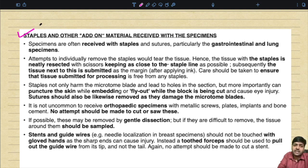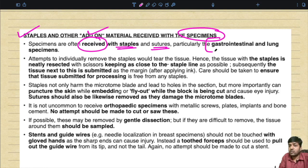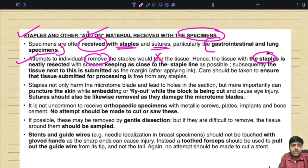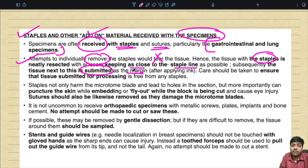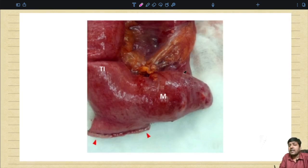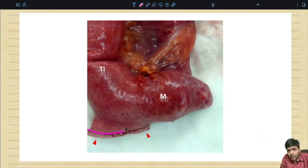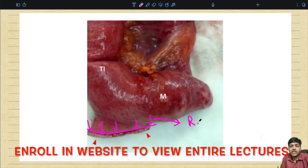Specimens are often received with staples and sutures, particularly gastrointestinal and lung specimens. Attempts to individually remove staples will tear the tissue; instead, the tissue with the staple is neatly resected with scissors, keeping as close to the staple line as possible. The tissue next to this cut is submitted as the resection margin after applying ink. Care should be taken to ensure that tissue submitted for processing is free from any staples.